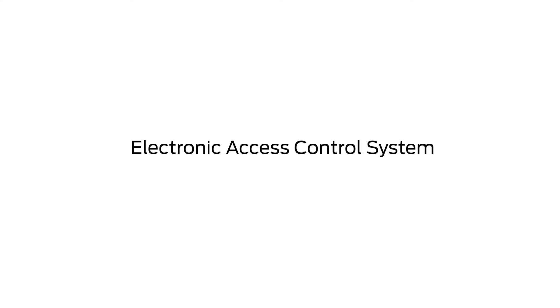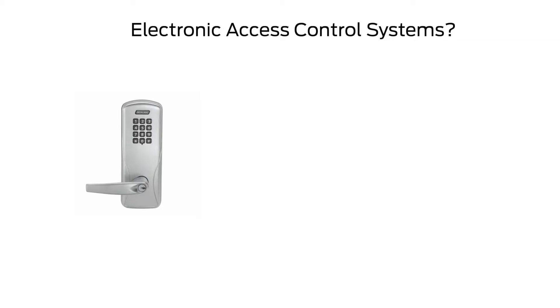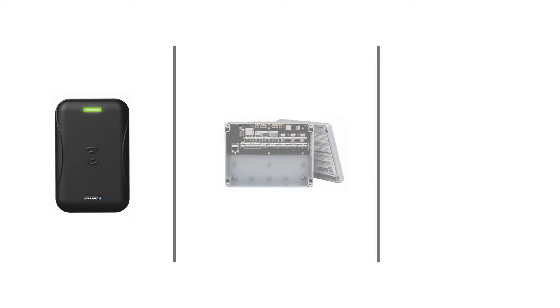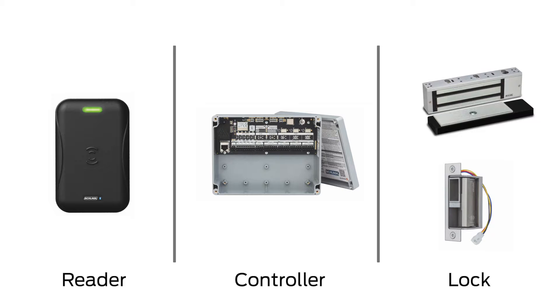Electronic access control systems can seem complicated and confusing. Sometimes all you need is a lock, and other times you need dozens of different pieces to complete the system. Let's start simple and put things into categories. All access control systems have three parts. Some systems have more than three, but in every single system it's possible to identify three parts: the reader, the controller, and the locking device. No matter what system you're looking at, you should be able to spot these three parts.